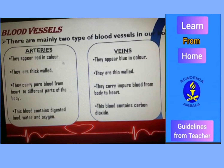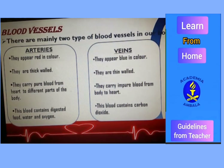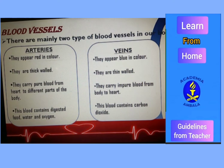The heart doesn't work alone — it has a team, and the team members are blood vessels. There are mainly two types of blood vessels: arteries and veins. Arteries appear red in color and are thick-walled, whereas veins appear blue in color and are thin-walled. Arteries carry pure blood — that is oxygenated blood, blood rich in oxygen — from the heart to different parts of the body. Veins carry impure blood, that is blood with more carbon dioxide, from the body back to the heart.